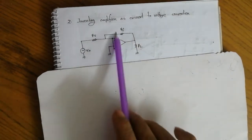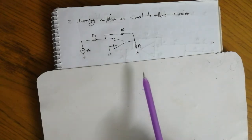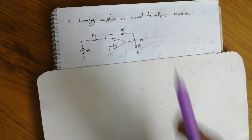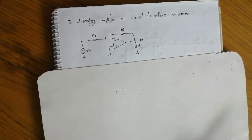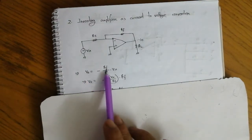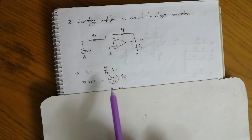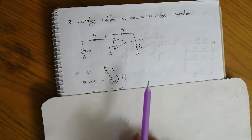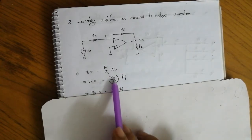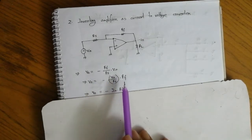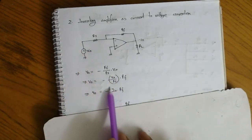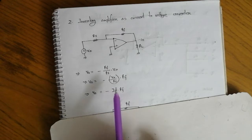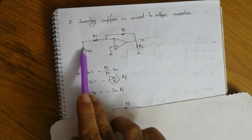We know that the inverting amplifier diagram gives us the equation for V0. V0 is equal to minus Rf over R1, multiplied by Vin. From this, Vin divided by R1 gives us the current input, I_in.